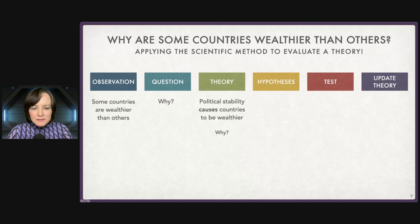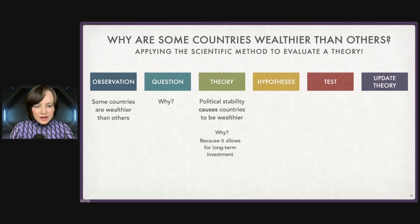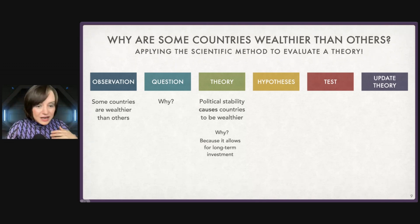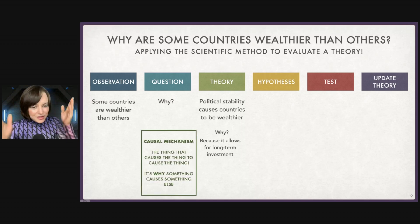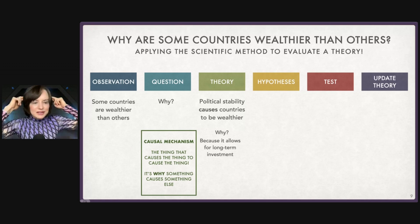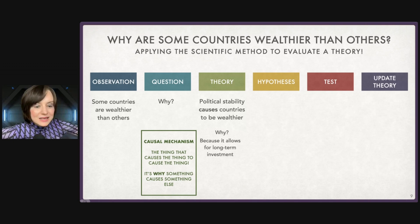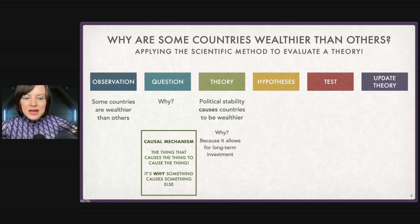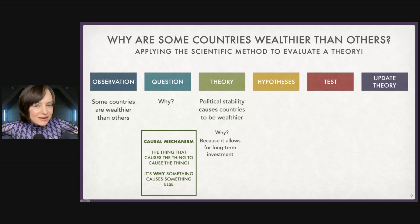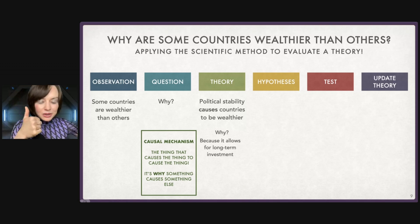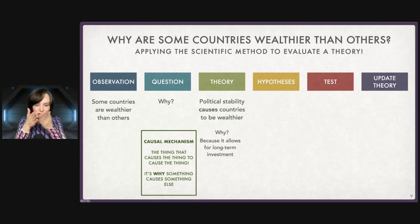What is it about political stability that causes countries to be wealthier? I take my 'why' and drill down even further. Political stability allows for long-term investment — maybe in domestic projects, maybe other countries are investing there because it's stable. This drilling down from 'X causes Y' to 'what is it about X that causes Y' is a very important concept: the causal mechanism. My definition: it's the thing that causes the thing to cause the thing. Many people say going to college causes getting a higher-paying job — but what is it about college? Is it what we learn, the networks we form, or the credential on our resume? That's the causal mechanism, and every mechanism you can drill further and further down.